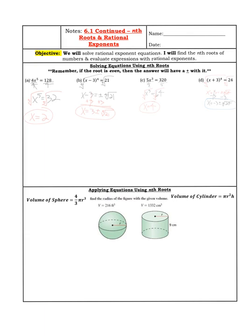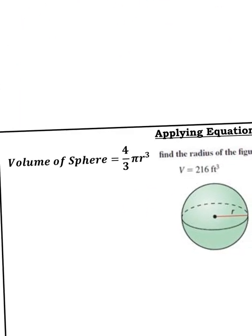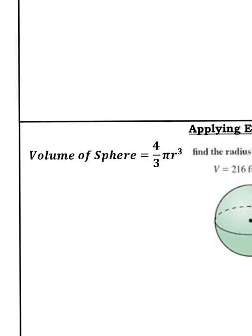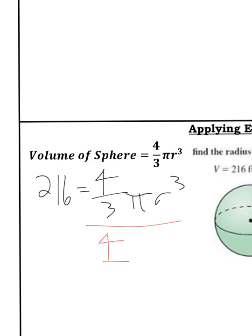So we're going to plug in everything. We know the volume of a sphere equals (4/3)πr³. So I'm going to say that 216 = (4/3)πr³. Well, 4/3 and π are a number, so you're going to divide both sides by (4/3)π. That's what you'll type in your calculator: 216 divided by (4/3)π.